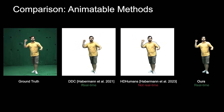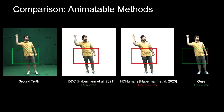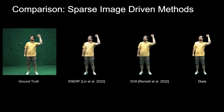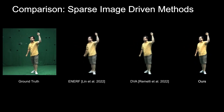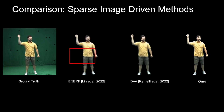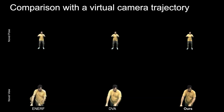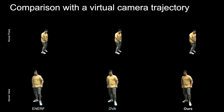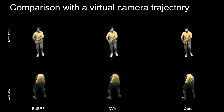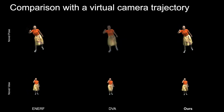We present a comparison to previous work on pose-driven animation. Our method generates sharper wrinkles and is more consistent with the ground truth while running at real-time. We also present a comparison against methods that are real-time and sparse image-driven. ENERF suffers from view-consistency artifacts due to its constrained color formulation, and DVA struggles with loose clothing and suffers from blurriness. On a virtual camera trajectory, please observe the view-consistency artifacts in ENERF and the inability of DVA to model loose clothing.